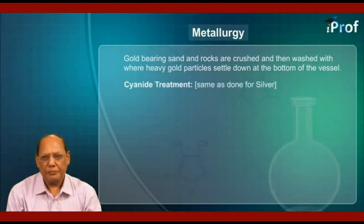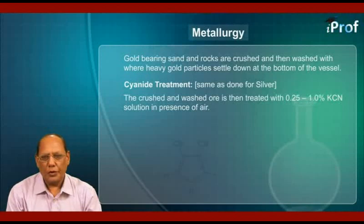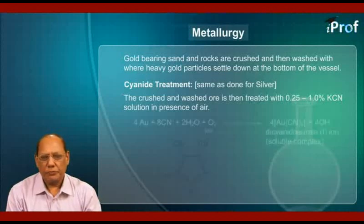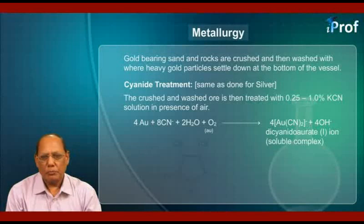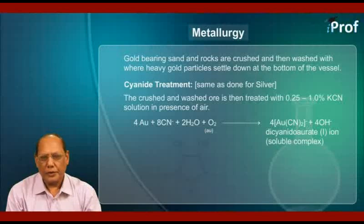Cyanide treatment — it is the same as done for silver. The crushed and washed ore is then treated with 0.25 to 1.0% potassium cyanide solution in presence of air, where the following reactions occur: 4Au + 8CN⁻ + 2H₂O + O₂ (from air) → 4[Au(CN)₂]⁻. This complex ion is the dicyanoaurate(I) ion, a soluble complex, plus 4OH⁻.